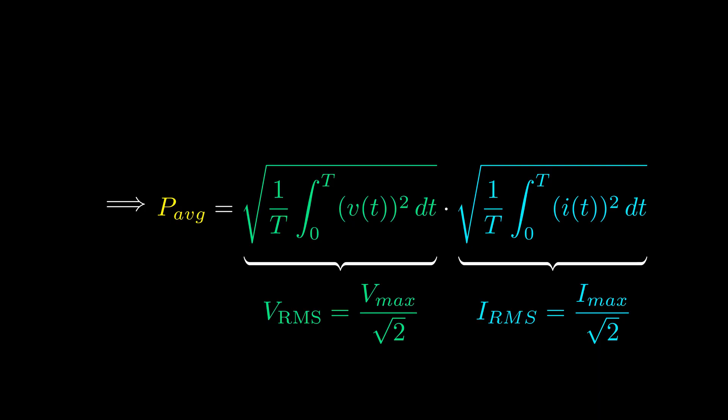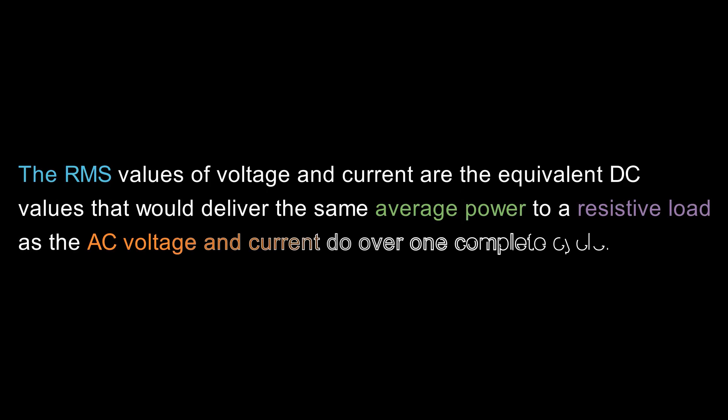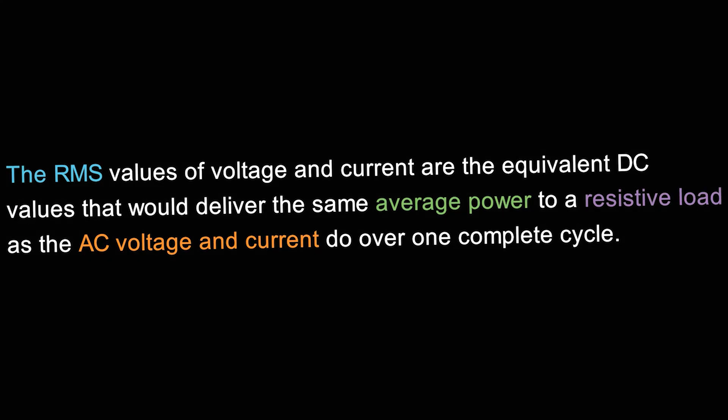We now have a clear definition of RMS values for current and voltage. RMS values for voltage and current are equivalent DC values that would deliver the same average power to a resistive load as the AC voltage and current do over one complete cycle.